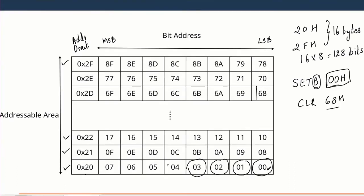Now let us look at the instruction CLEAR 68H. When I am talking about 68H, it means the LSB of address 2DH in the bit addressable area. So when I clear it, whatever value is in there — if it is 1, it will become 0; if it is 0, it will remain the same.